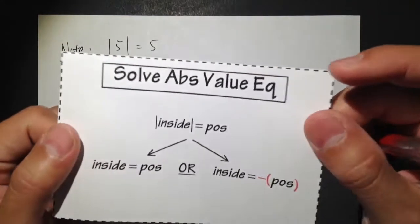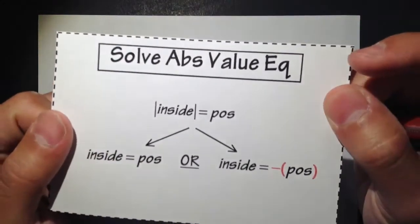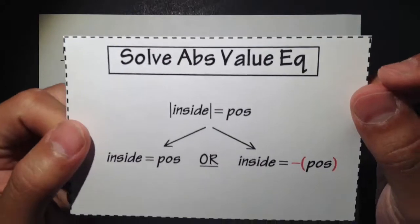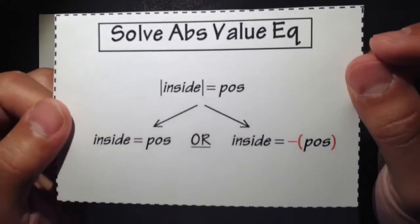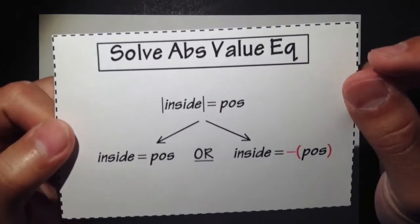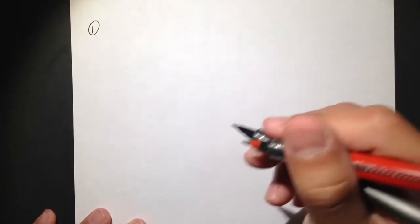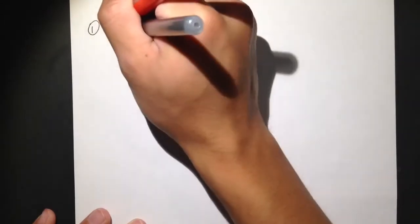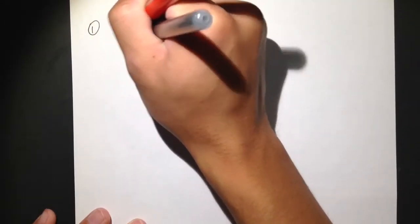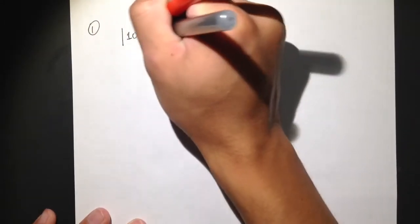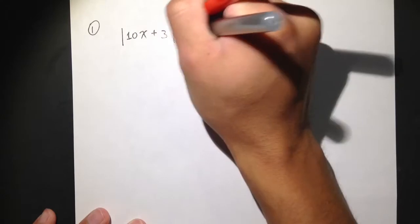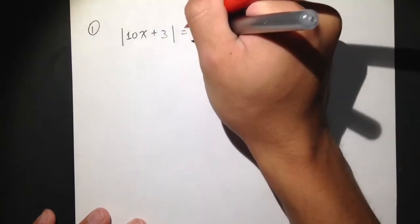I have a flashcard and I'm going to work out some examples. The flashcard is going to be on my website, which is in my description. So let's get to some of the examples. Let's talk about example number 1: I want to solve the absolute value of 10x plus 3 is equal to 17.